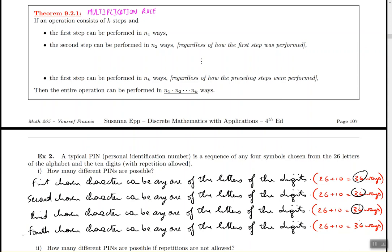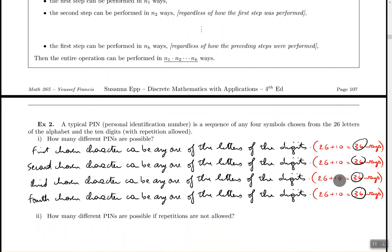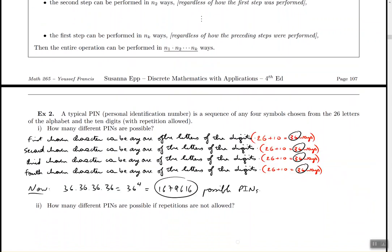All the steps that I can do can happen in 36 different ways. So the total number of possibility, the total number of PINs is going to be 36 times 36 times 36 times 36. So basically, 36 to the power of 4. So I'm going to squish this down a little bit and put that number in. So 36 to the power of 4 is going to be 1,679,616. So that's how many total possible PINs there are.